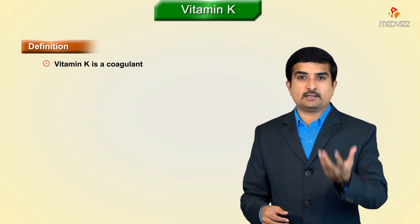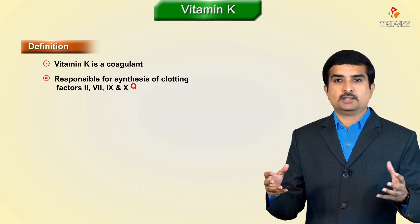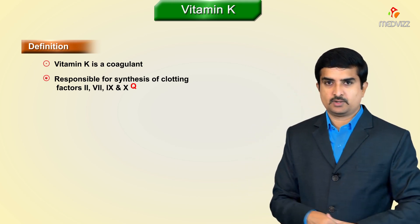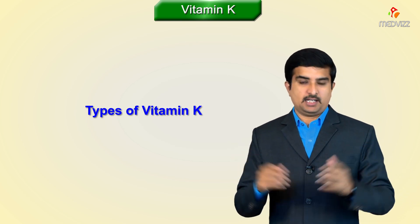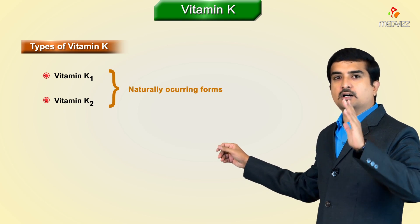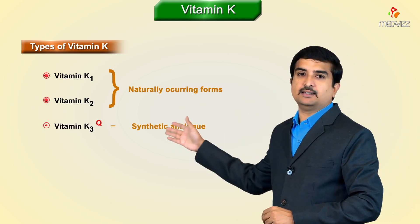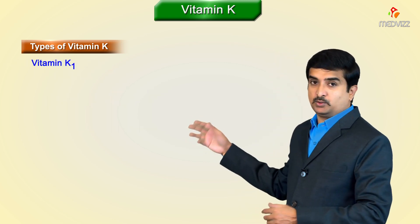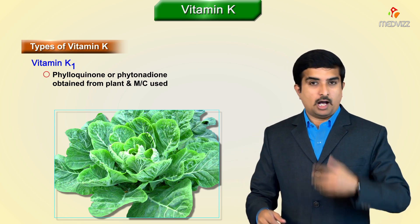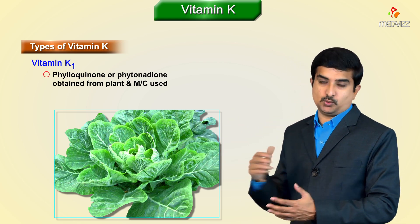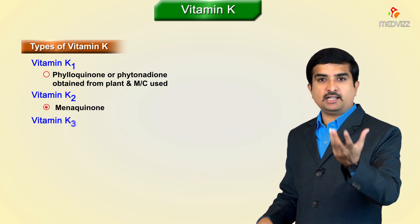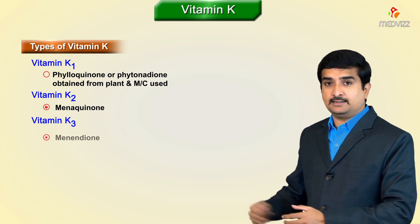Vitamin K is a coagulant responsible for synthesis of clotting factors 2, 7, 9, and 10. There are different types of vitamin K: K1 and K2 are two naturally occurring forms while K3 is the synthetic analog. Vitamin K1 is phylloquinone or phytonadione, obtained from plants and most commonly used. Vitamin K2 is menaquinone, and vitamin K3, the synthetic analog, is menadione.